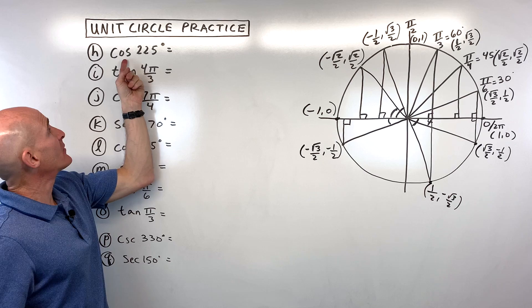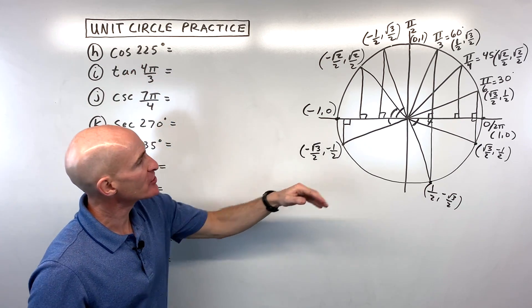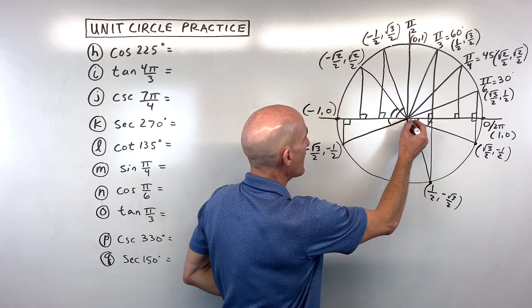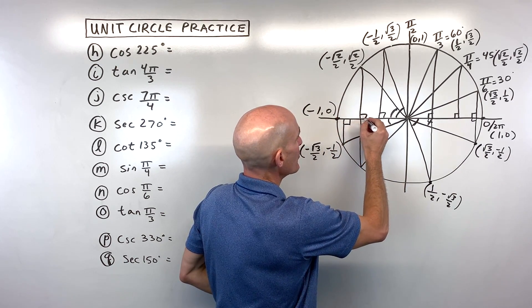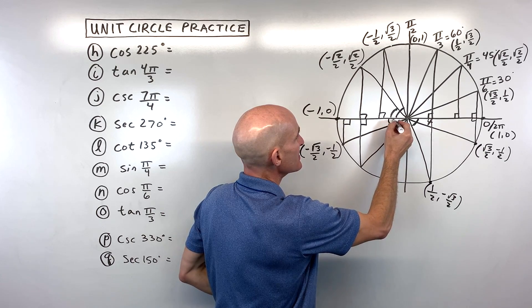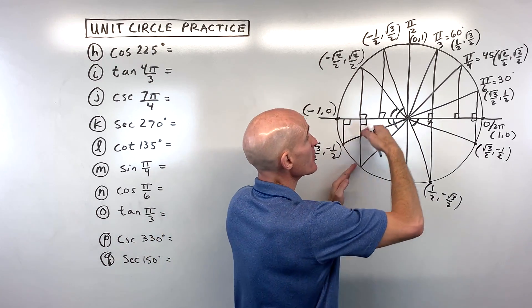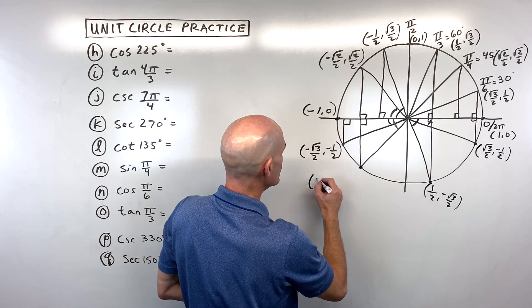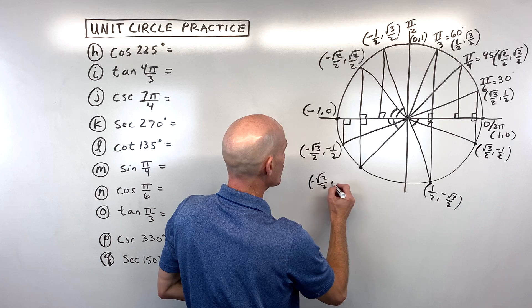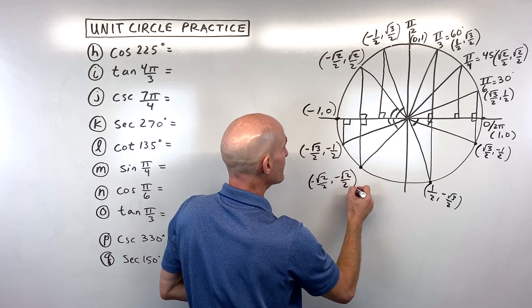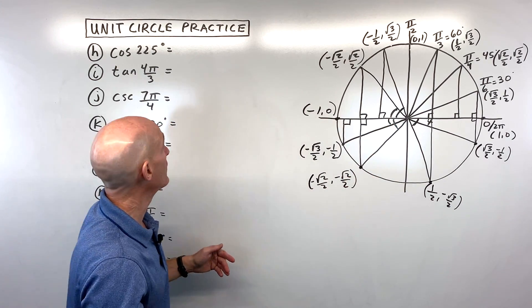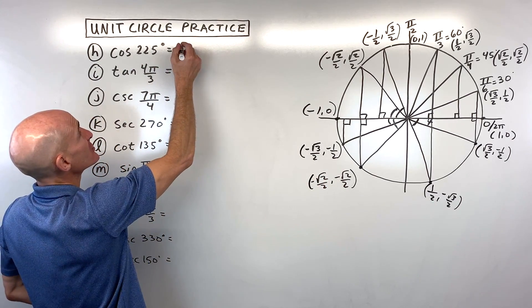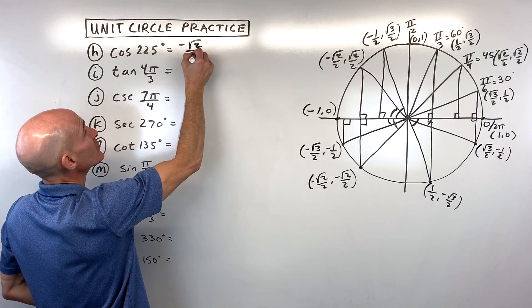Letter H: cosine of 225 degrees. 225 is 180 plus another 45, landing in the third quadrant. The reference angle is 45 degrees, so coordinates match the first-quadrant 45-degree point — √2/2, √2/2 — but both are negative in the third quadrant. Cosine is the x-coordinate, so the answer is negative √2/2.